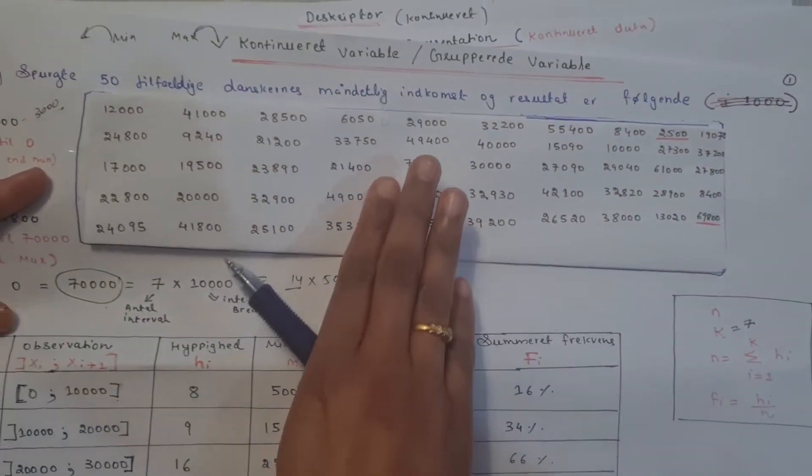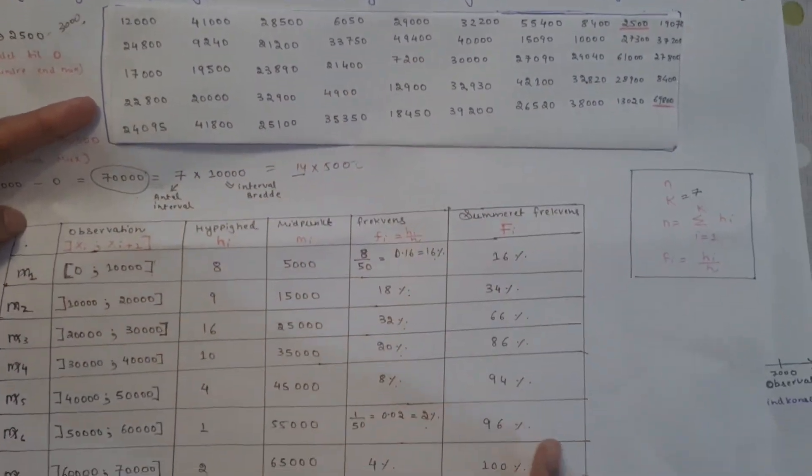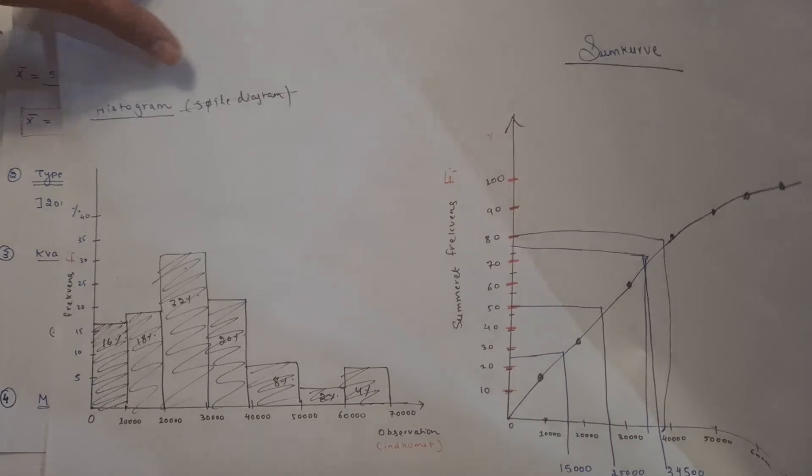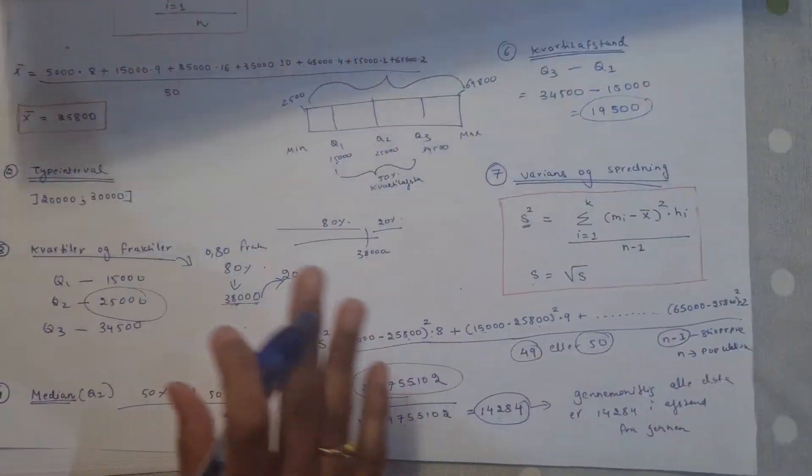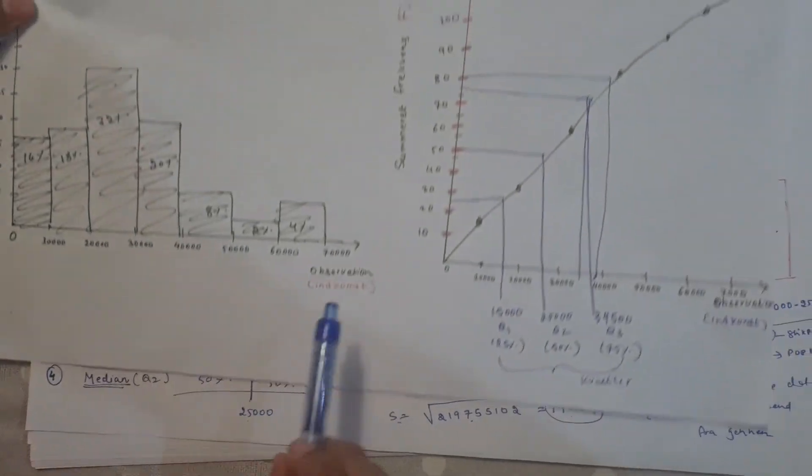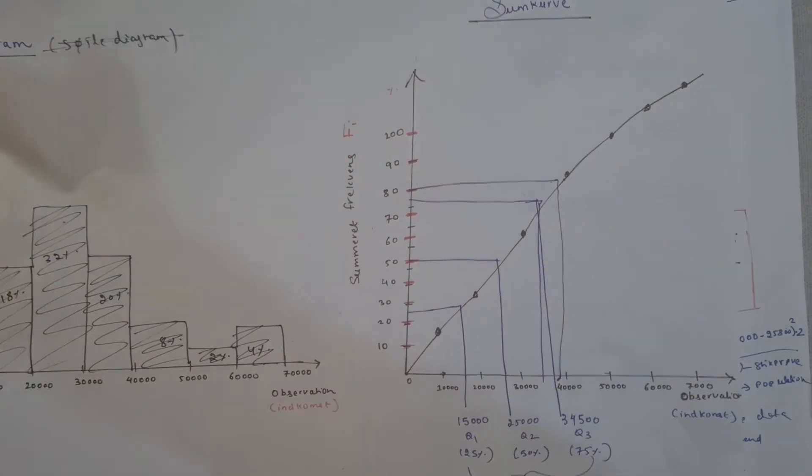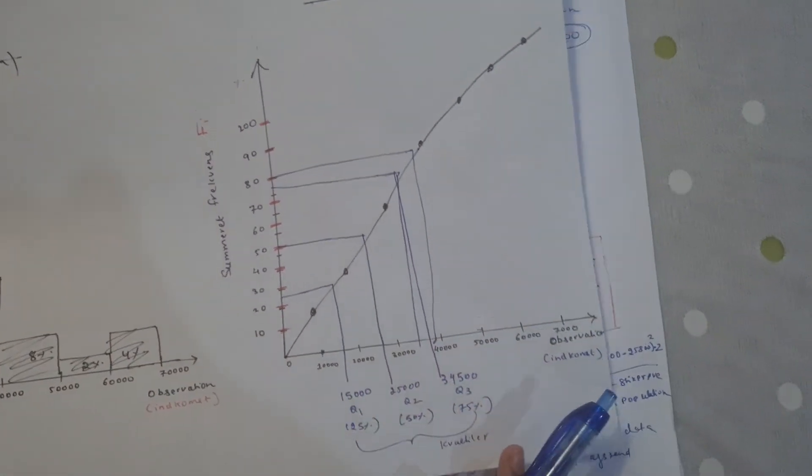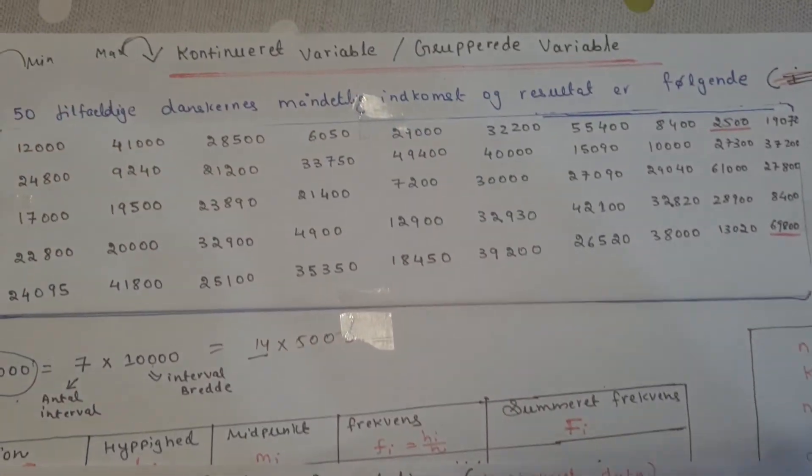So I hope you have understood. I have shown you here: first we have descriptive statistics, frequency tables, histograms, quartiles, fractiles, and variation measures. So they were the main topics on continued and grouped data.